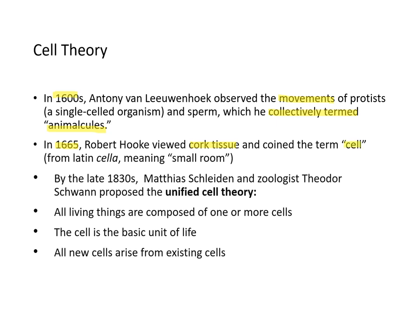The term 'cell' comes from the Latin word 'cella,' meaning small room. By the late 1830s, Matthias Schleiden and Theodor Schwann proposed a unified cell theory: all living things are composed of one or more cells, the cell is the basic unit of life, and all new cells arise from existing cells.